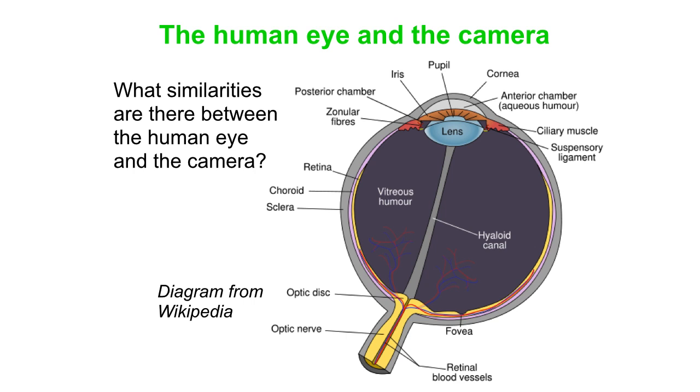So here is a lovely diagram from Wikipedia and it shows kind of a slice through human eye showing all the different parts. You can see the pupil and the iris and the lens up at the top. And then of course the optic nerve and the retina on the back surface of the inside of the eyeball. And lots of other things there too.